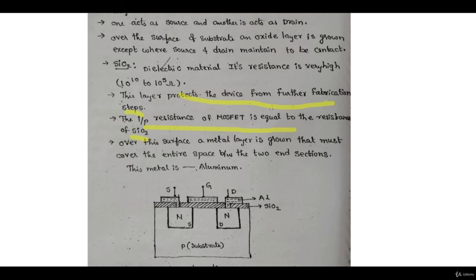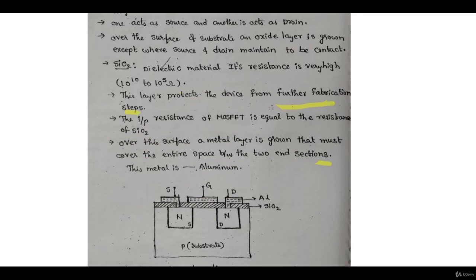The input resistance of the MOSFET equals the resistance of the SiO2 layer. Over the SiO2 surface, an aluminum metal layer is grown covering the entire space between the two ends — this provides the gate metal contact. So the structure is metal (aluminum), oxide (SiO2), and semiconductor (channel). We will next look at the working of the MOSFET and its characteristics for a complete picture.